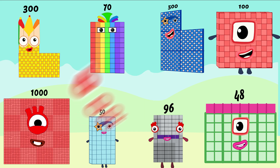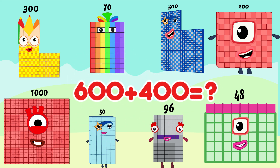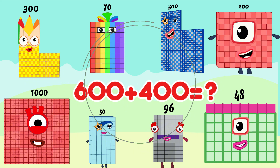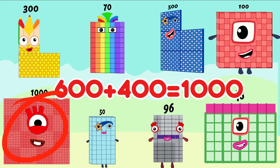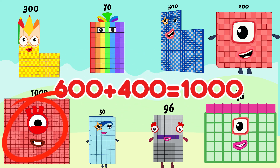600 plus 400 is equal. Is correct answer. 600 plus 400 is equal 1,000.